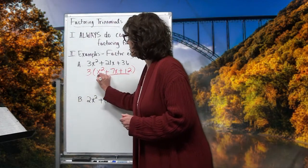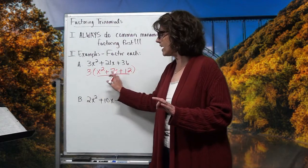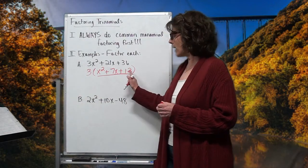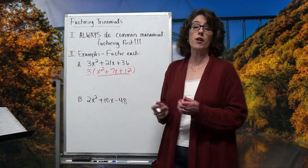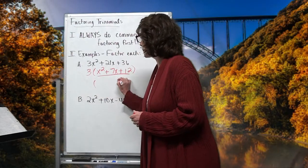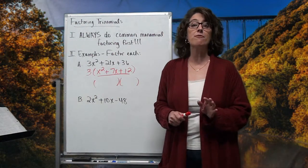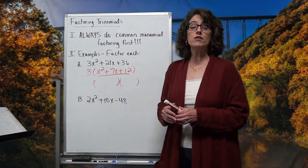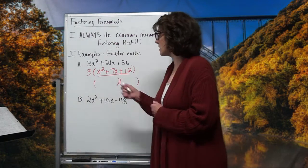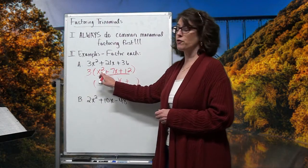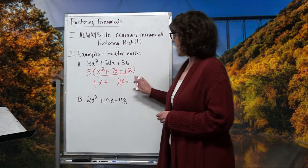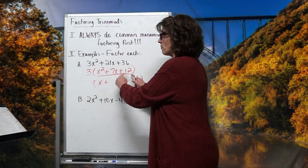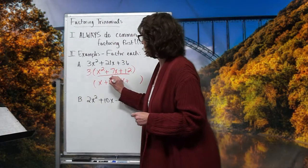I'm going to take what's inside this parenthesis and first check: is there anything more I can divide out? No — I can't take x's out of every term and the coefficients have nothing more to divide out. So I'm headed for the double parenthesis. The back sign is a plus, so the signs are the same. The middle sign tells me they're both pluses. x squared splits up as an x and an x. Now I find two numbers that multiply for 12 and add for 7 — that's 4 and 3.